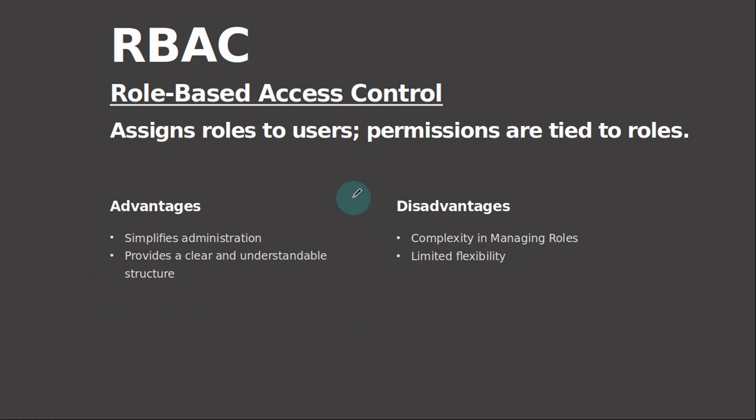Let's go ahead and get started. RBAC — role-based access control — assigns roles to users, and permissions are tied to those roles. One of the advantages is that it simplifies administration by managing permissions at a role level. RBAC simplifies administration of access control by grouping users into roles and assigning permissions to those roles. This approach reduces the complexity of managing individual user permissions, especially in environments with a large number of users or complex permission requirements. Administrators can easily grant or revoke permissions by simply adjusting the roles assigned to users.